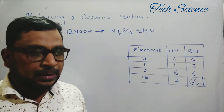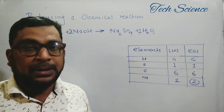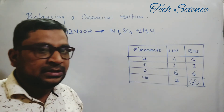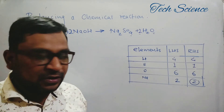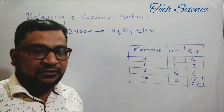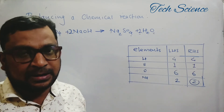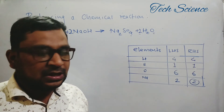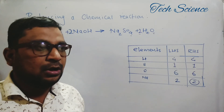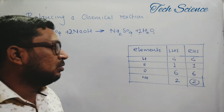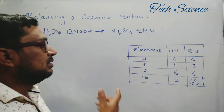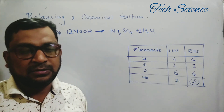So if any chemical equation is given — whether in word format or molecular format — you should write the elements, count the number of atoms at the reactant side, count the number of atoms at the product side, and try to balance starting with those elements or compounds that have the greater number of atoms. Use this technique to balance the equation. That is today's topic — thank you.